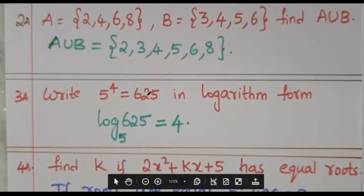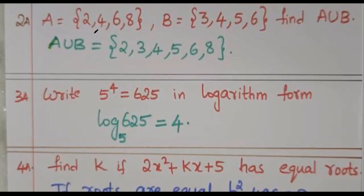Question 2: A is {2, 4, 6, 8} and B is {3, 4, 5, 6}. Find A union B. A union B contains all elements which are in A and B combined. The key thing to remember is you should not repeat elements — 4 and 6 appear in both sets but should be written only once.